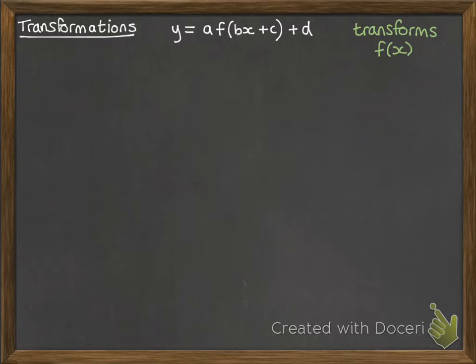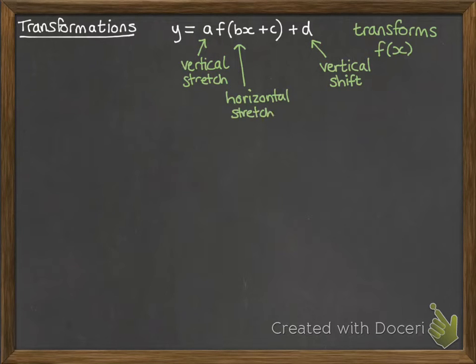So a reminder of what happens with each of those things. The a, because it's outside of the function, is going to give you something happening vertically - that will be a vertical stretch. Same with the d. That's a vertical one but this time it's a vertical shift. So multiplying gives you a stretch and addition/subtraction gives you a shift. Outside the function means it's vertical. Inside the function is a horizontal change. So multiplying by b is a stretch in the horizontal direction and adding c is a shift in the horizontal direction. So we can apply the same things with our trig graphs.